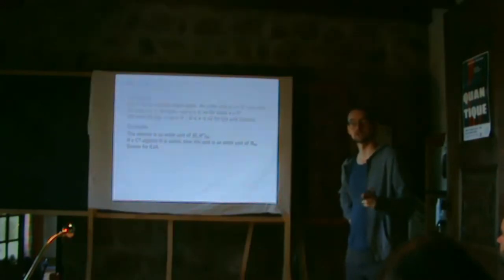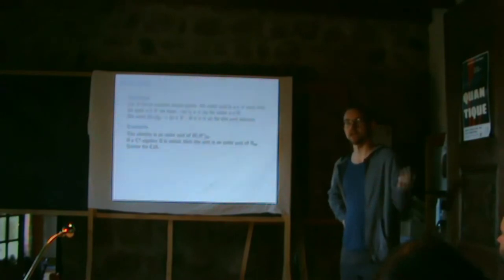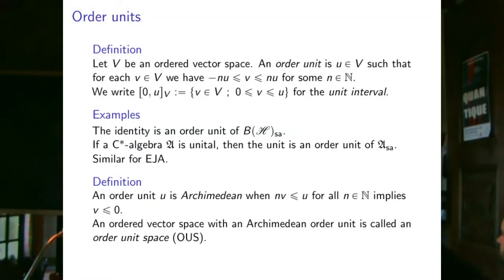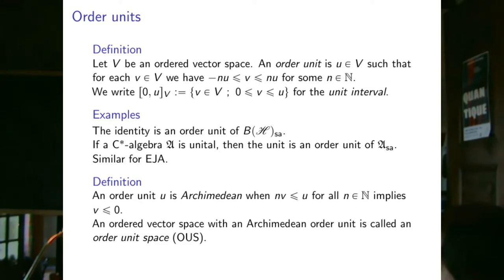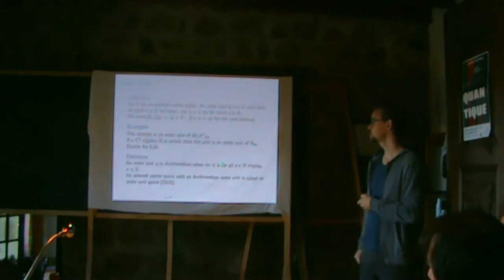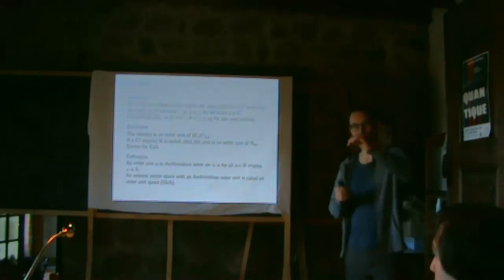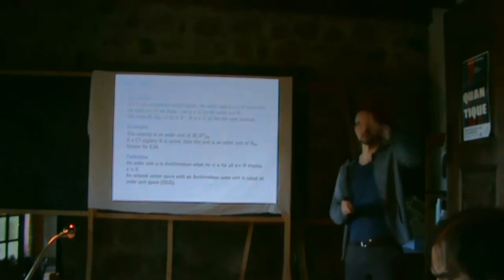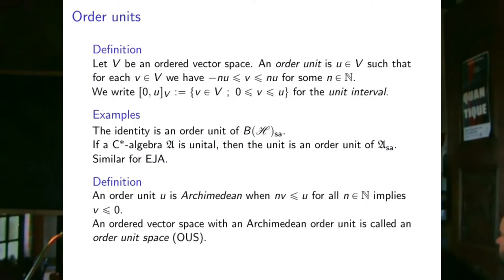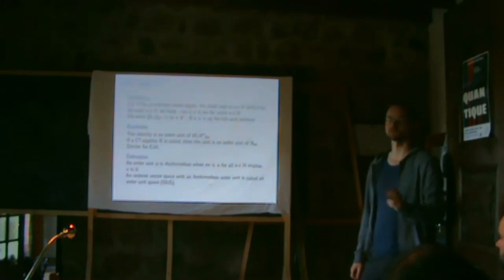An order unit can be Archimedean, which means there are no infinitesimal elements: if v ≤ ε·u for every positive ε, then v ≤ 0. Without this property, you could have a positive vector that stays below a fixed element under arbitrary scaling — an infinitesimal. An ordered vector space with a fixed Archimedean order unit is called an order unit space, which turns out to be very well-behaved mathematically.